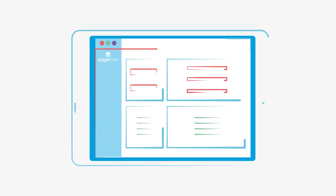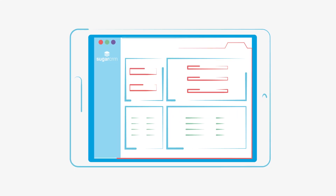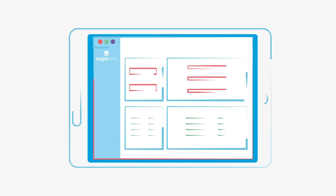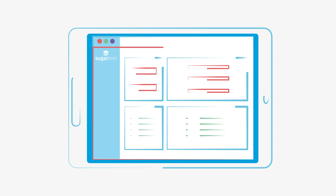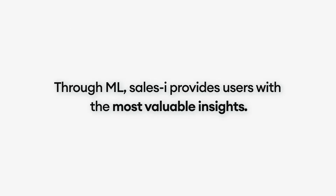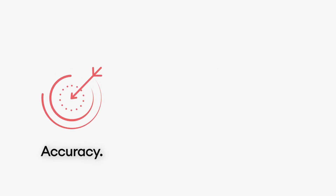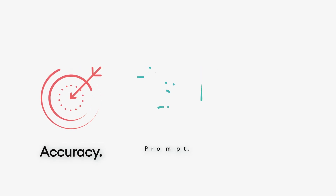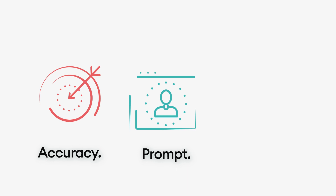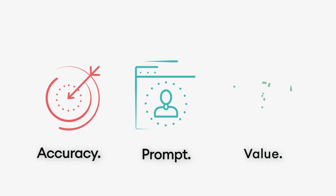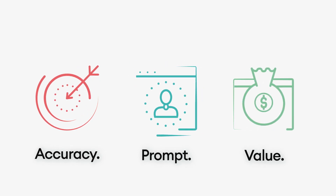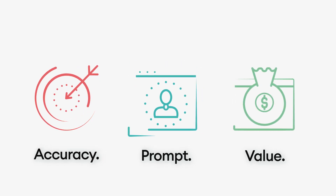The real-time sales insights are delivered as opportunities to the SugarCRM user's dashboard. And through machine learning, SalesEye provides users with the most valuable insights — it calculates the confidence score of the opportunity's accuracy, prompts the salesperson to follow up with the customer, and most importantly, shows the potential value of these opportunities.